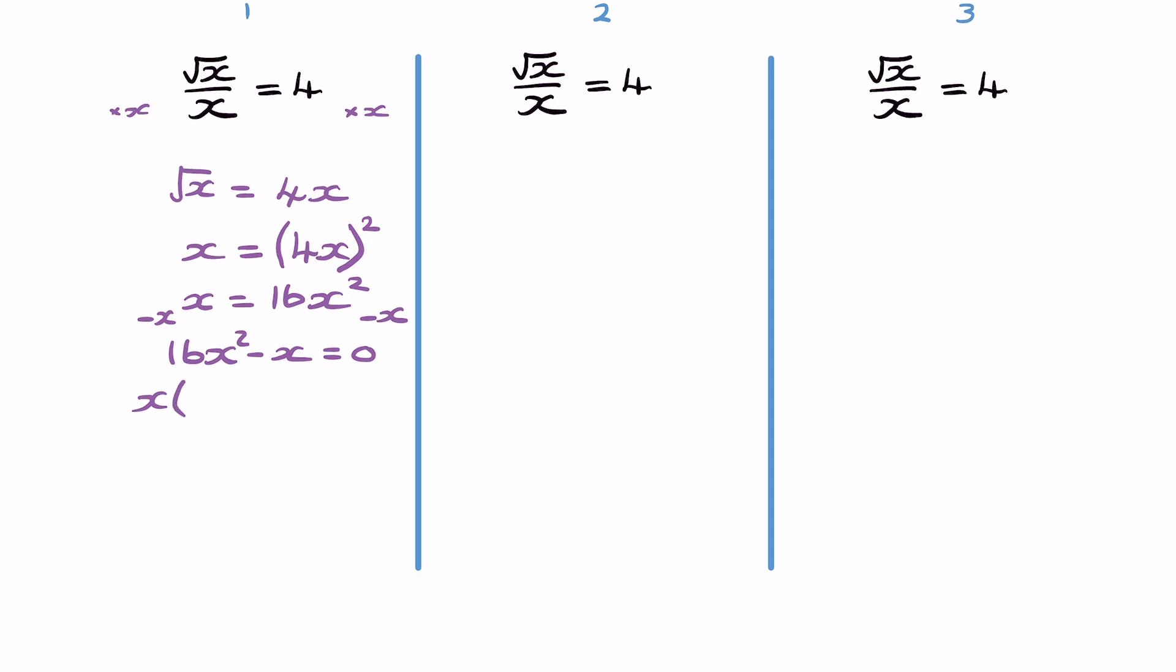So we'll bring that outside the bracket. Notice I say bracket, I know in many places you'll say parentheses. You can hear from my accent I'm from the UK, so we have those little differences, but I will always try and point it out. Inside the bracket, 16x and a negative 1, close our bracket, equal to 0.